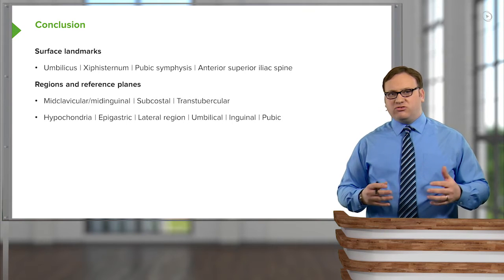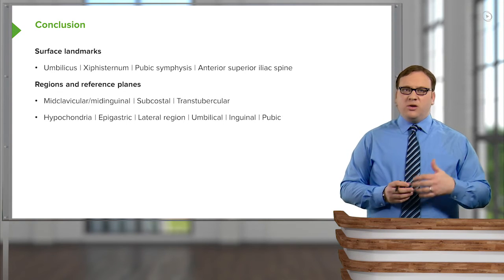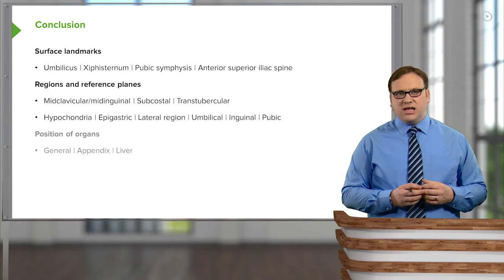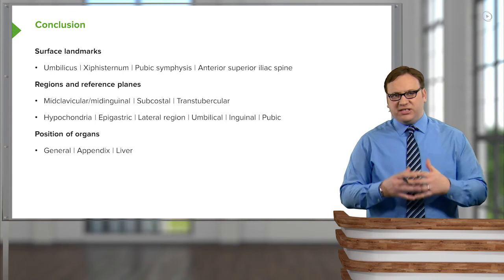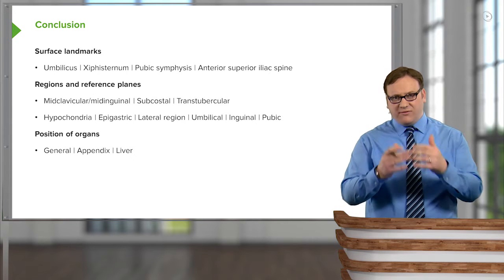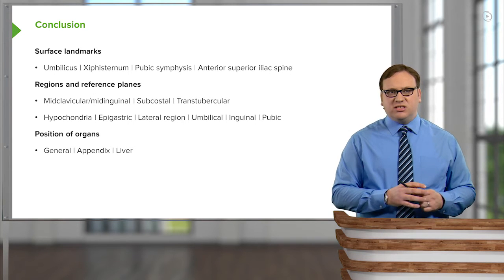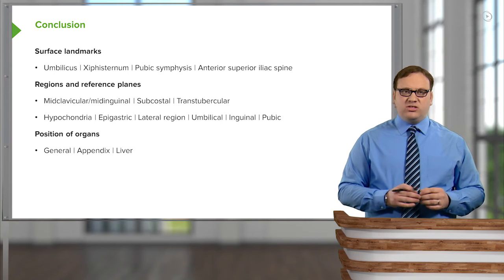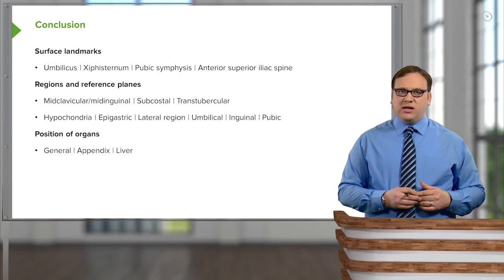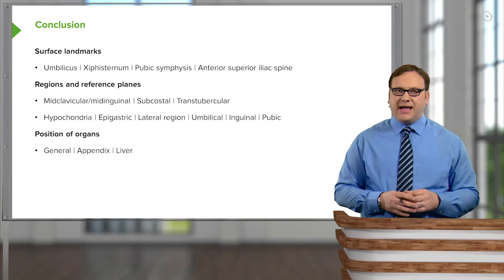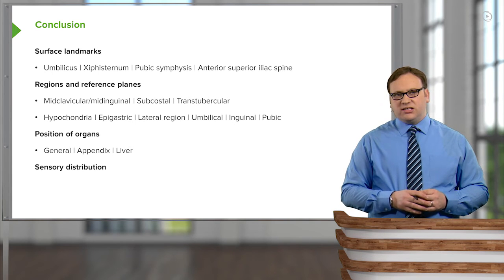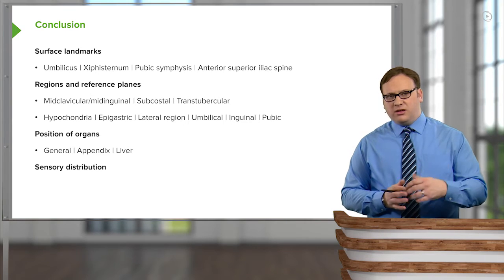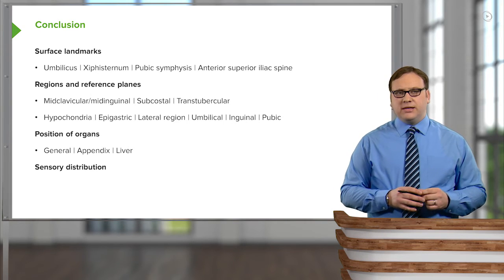We looked at how these planes divide up the anterior surface of the abdomen into numerous regions like the hypochondria, epigastric, lateral, lumbar regions, umbilical, and inguinal or pubic regions. We looked briefly at the position of some general organs within these specific regions, specifically the appendix and the liver. And towards the end, we looked briefly — though we'll return to this throughout the course — at the sensory distribution from the skin and also from the organs that lie deep to it.